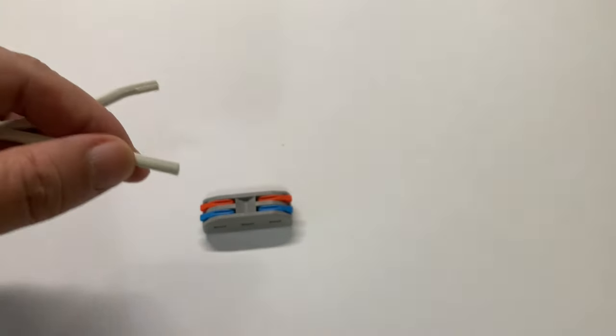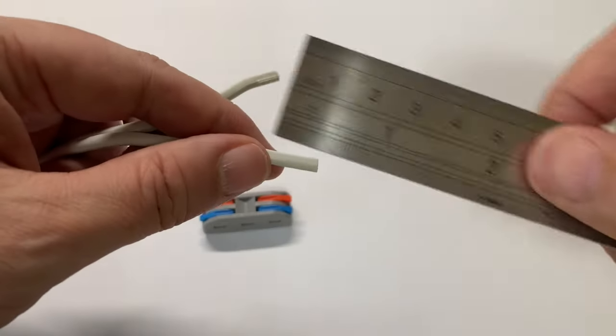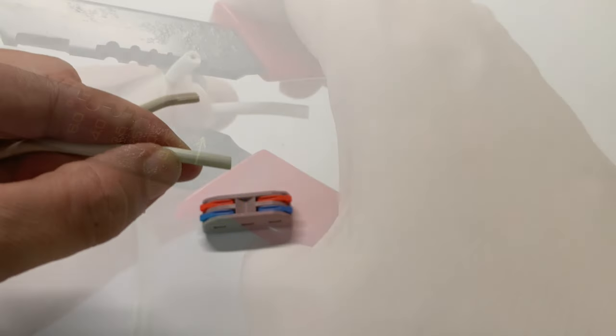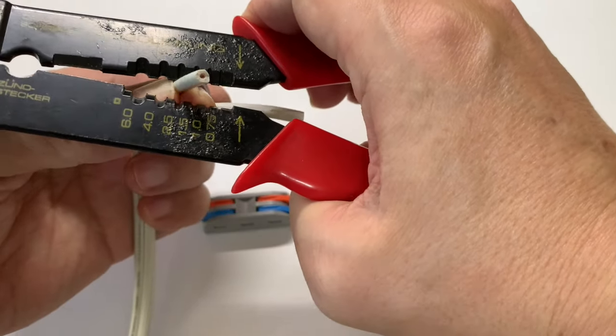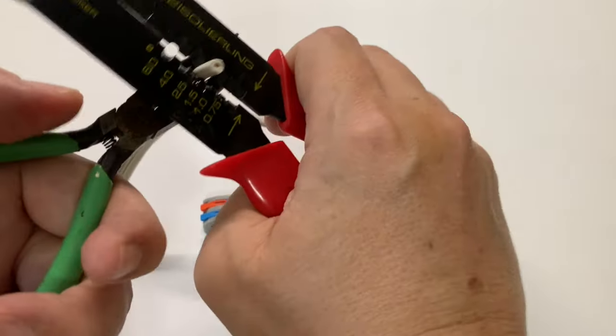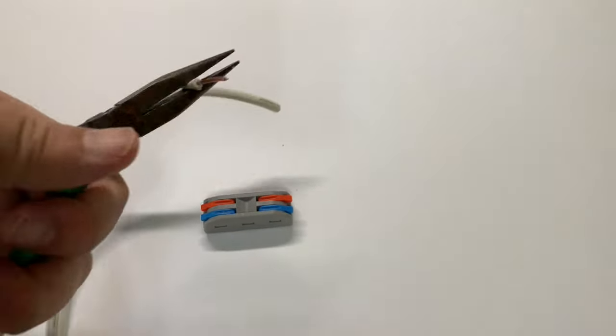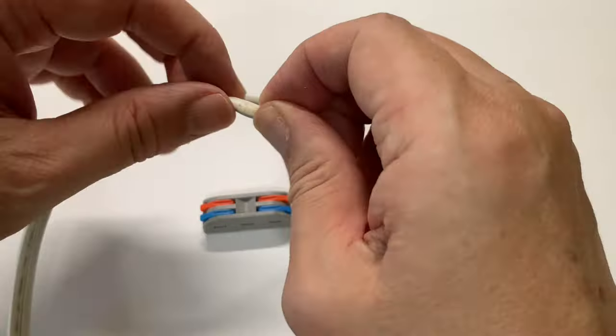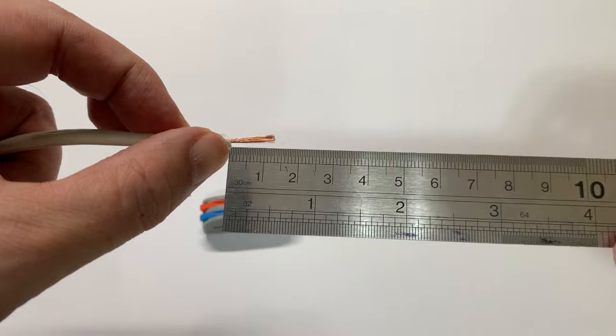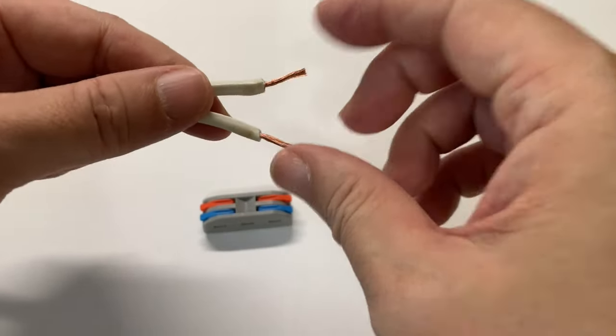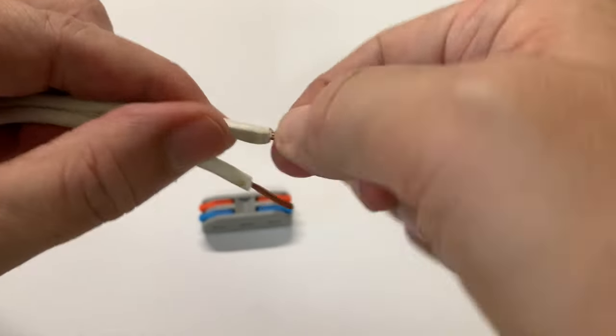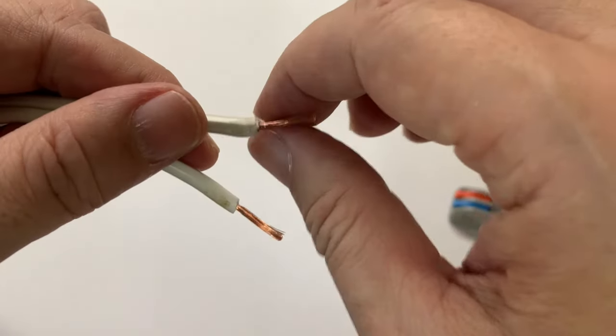Strip the wire insulation longer than this. I'm going to strip around 11 to 12 millimeters. Make sure to twist each stranded wire tightly.